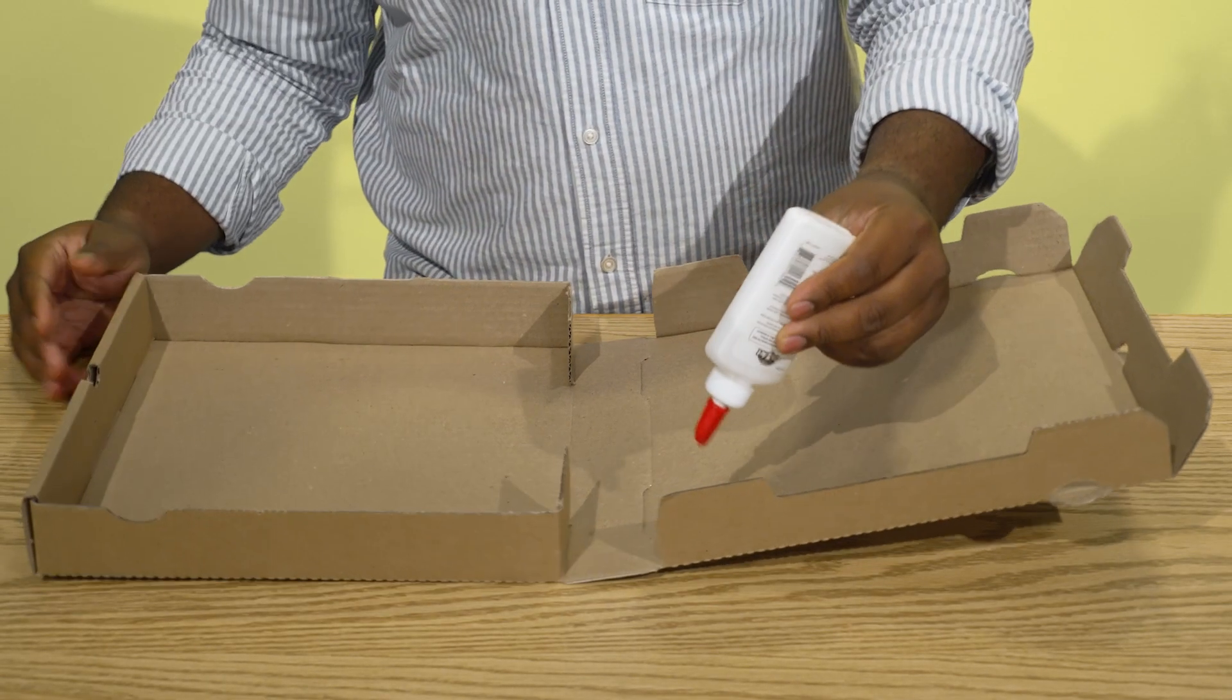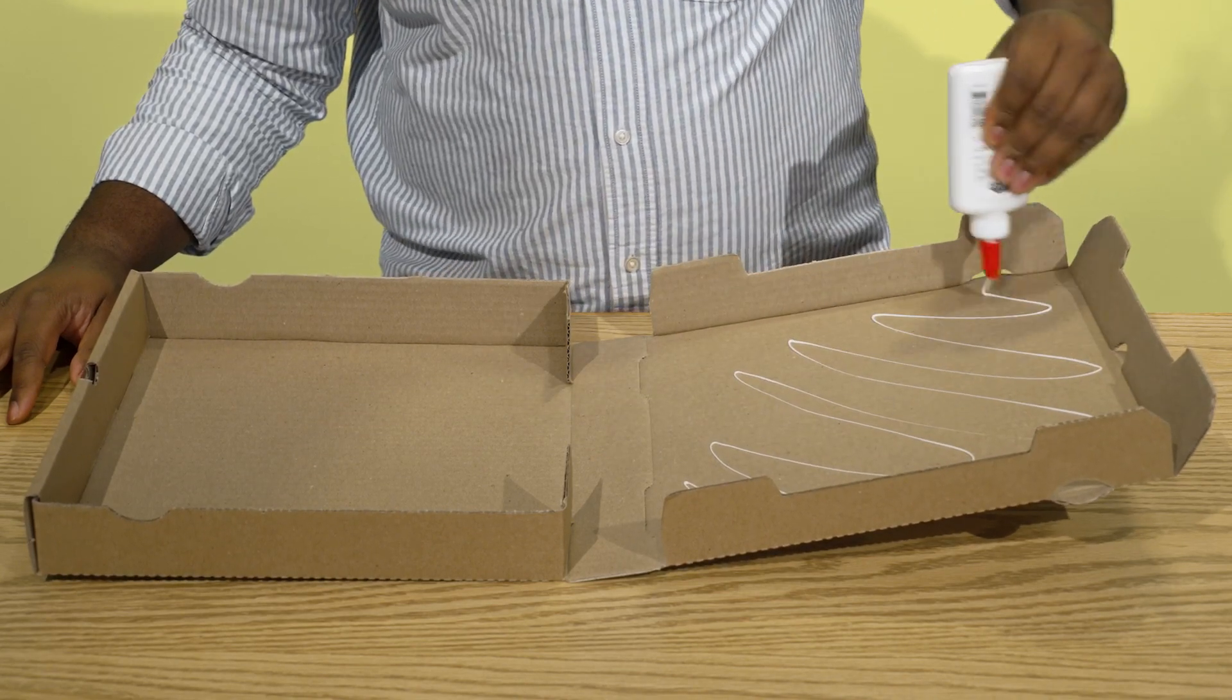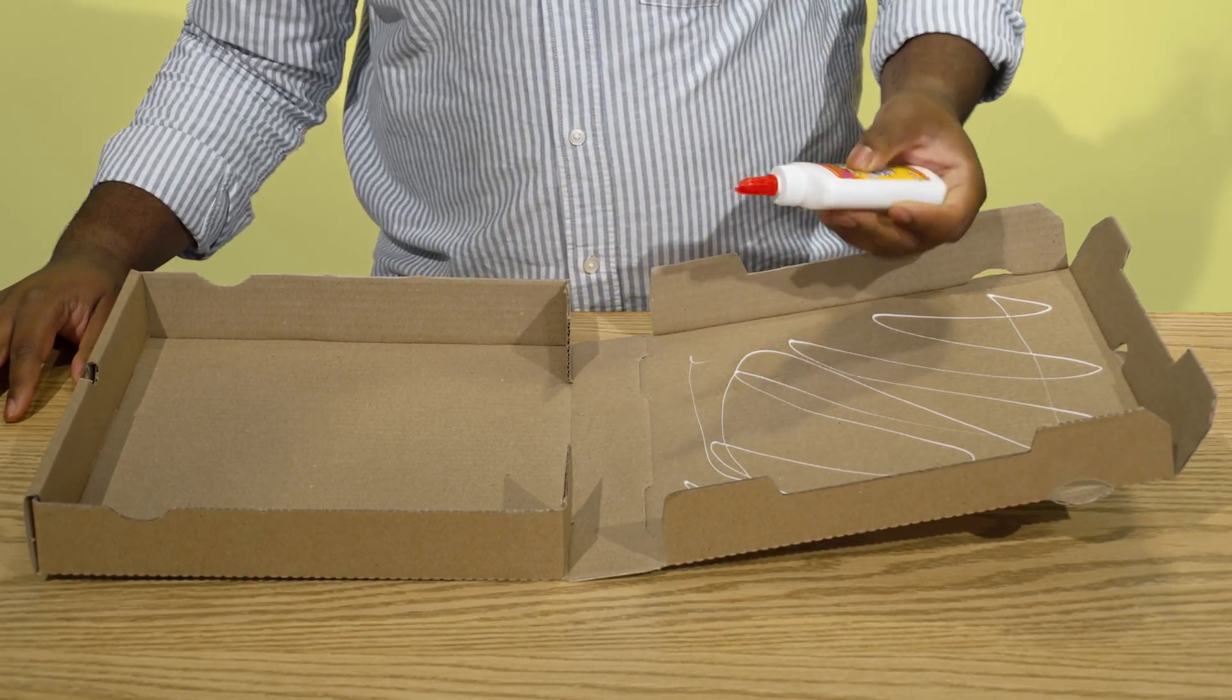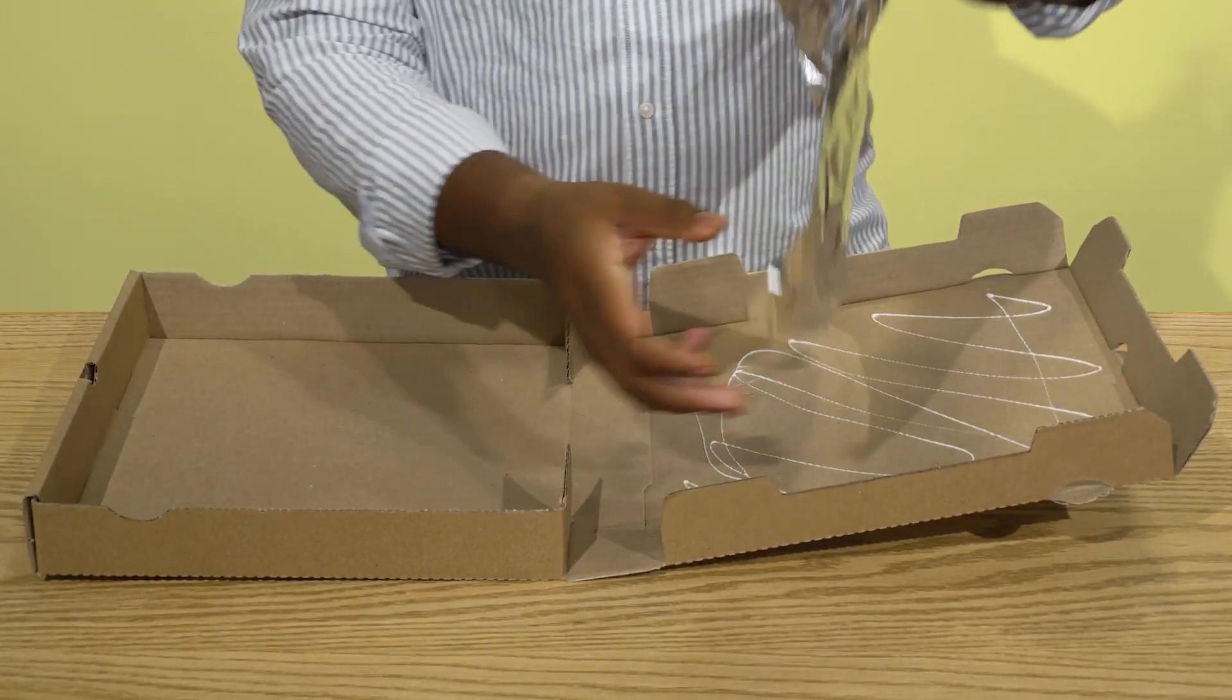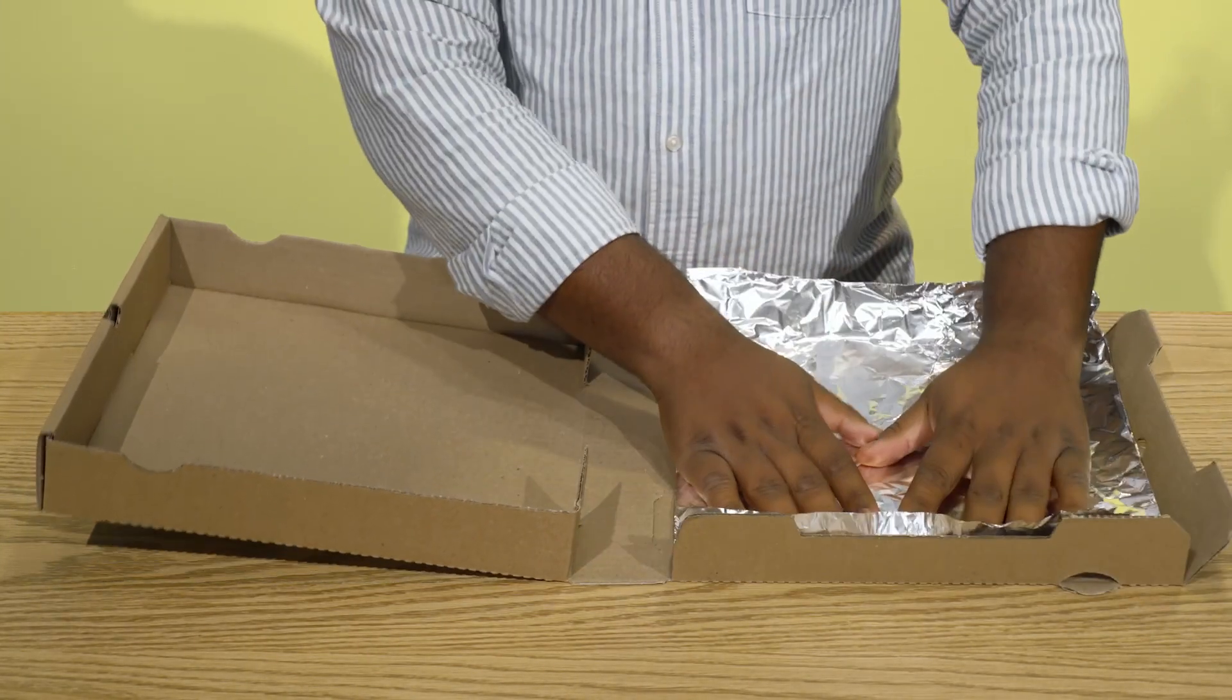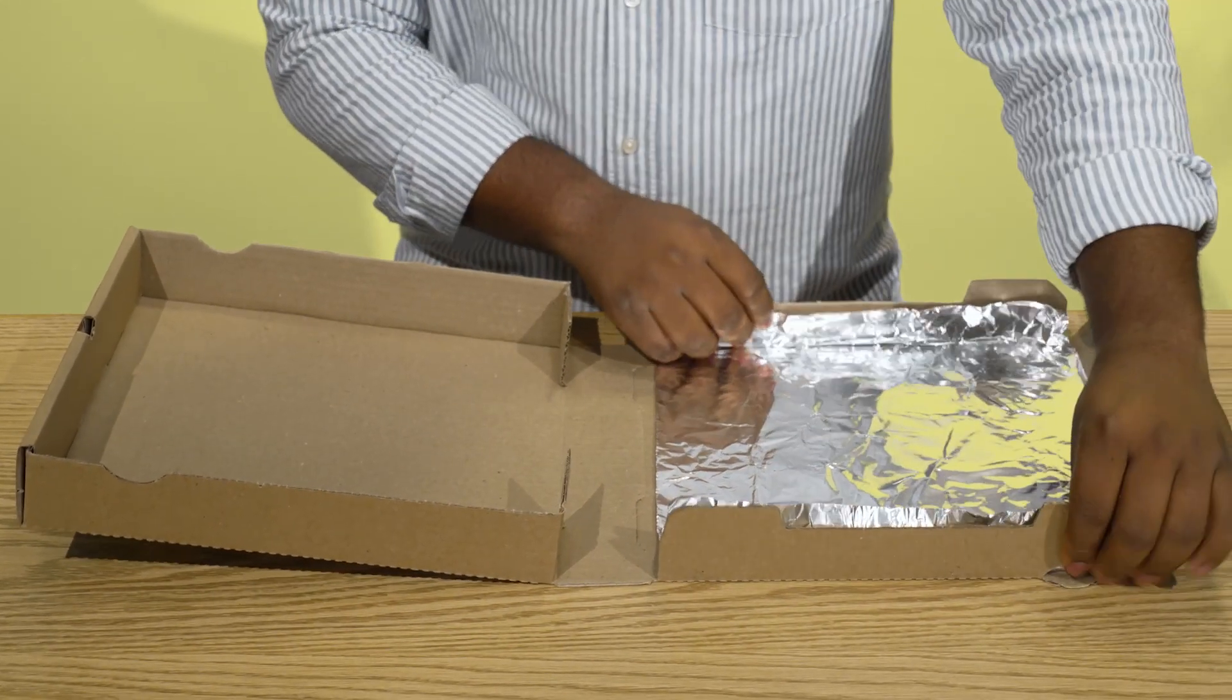Start with your clean dry pizza box. Cut a piece of aluminum foil slightly larger than the pizza box's lid. Tape or glue the foil onto the inside of the lid. Make sure it's smooth and that the reflective part is showing. You may have to use multiple pieces of foil.